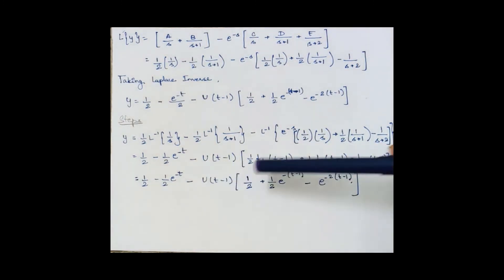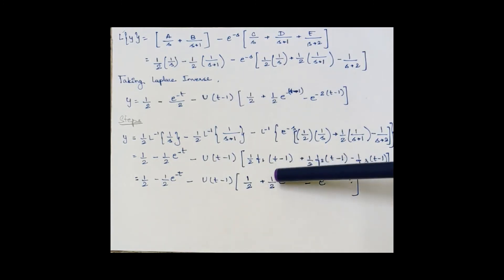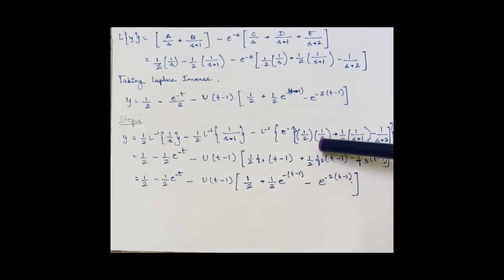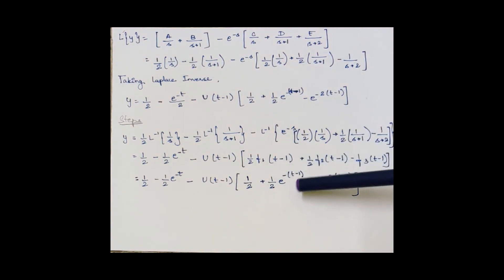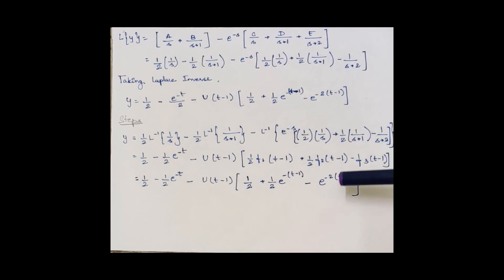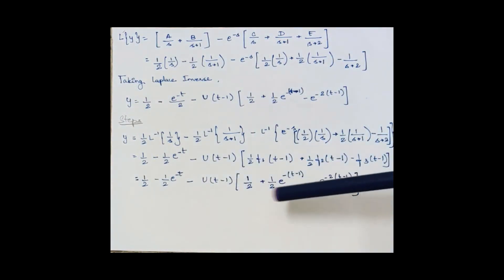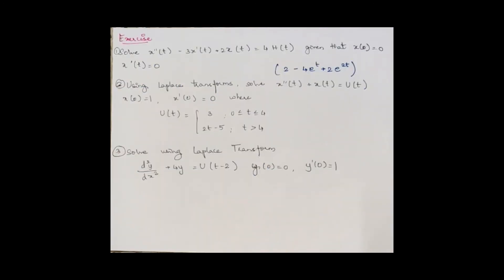Writing the solution neatly: since 1/(s+1) gives e^(−t), with t replaced by (t−1) you write e^(−(t−1)), and 1/(s+2) gives e^(−2(t−1)). The final solution of the differential equation using the Laplace transform method is y = 1/2 − (1/2)e^(−t) − u(t−1)·[1/2 + (1/2)e^(−(t−1)) − e^(−2(t−1))]. A few exercise questions are provided for practice. Thank you.